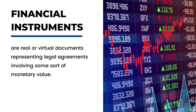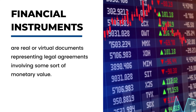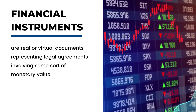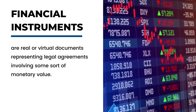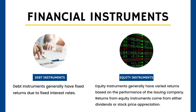Financial instruments are real or virtual documents representing legal agreements involving some sort of monetary value. This can be debt securities like corporate bonds, or equity instruments like shares of stock. Debt instruments generally have fixed returns due to fixed interest rates, while equity instruments generally have varied returns based on the performance of the issuing company. Returns from equity instruments come from either dividends or stock price appreciation.